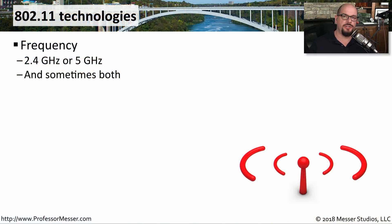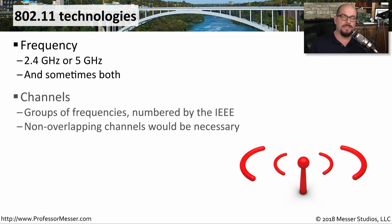There are a number of different technologies used to communicate over 802.11 networks. One big difference between different standards is the frequencies used to communicate. Some 802.11 networks use the 2.4 gigahertz frequency range, while others use the 5 gigahertz frequency range. The IEEE standards have grouped these frequencies into channels, which makes it very easy to reference when configuring a wireless access point.